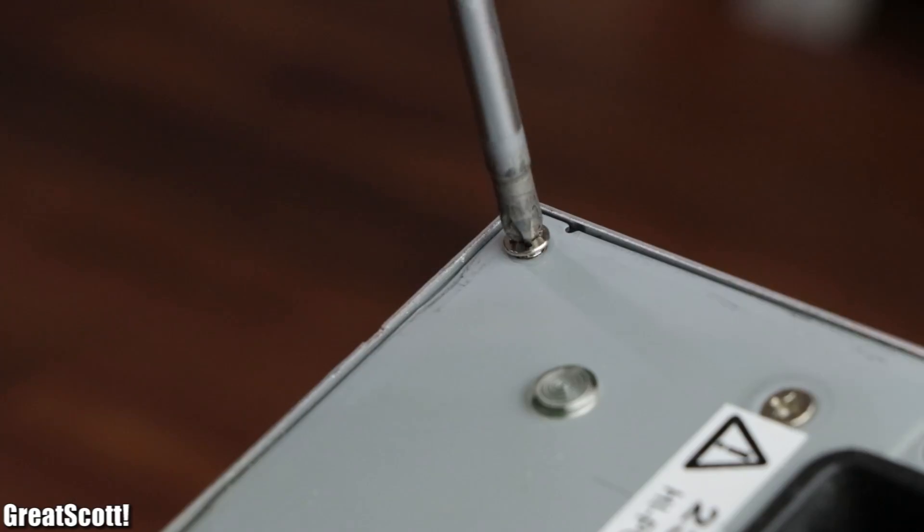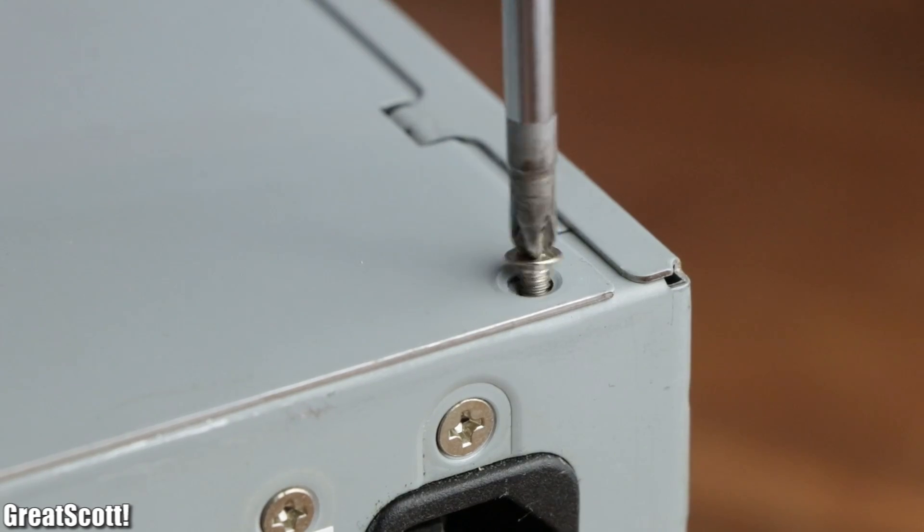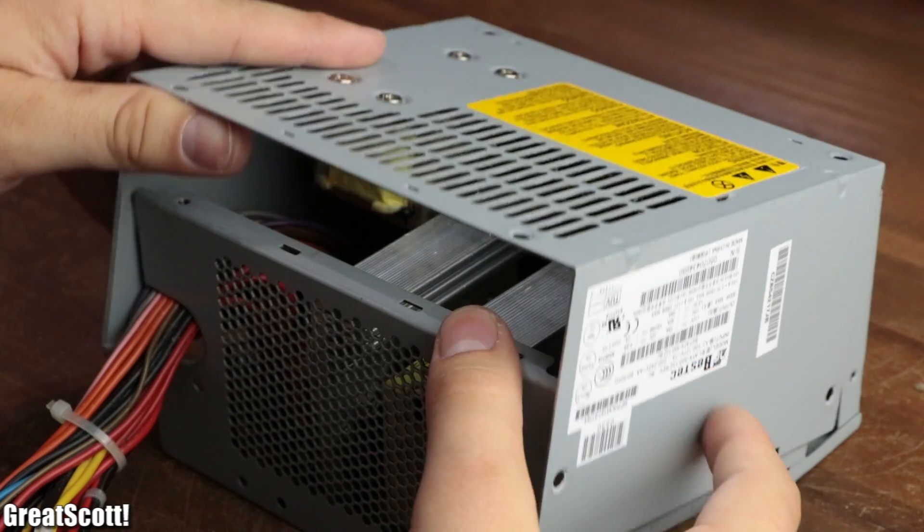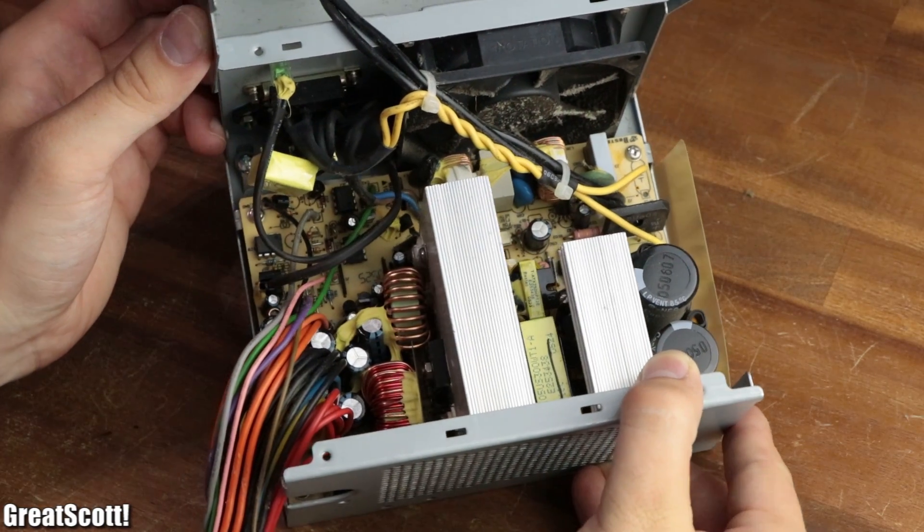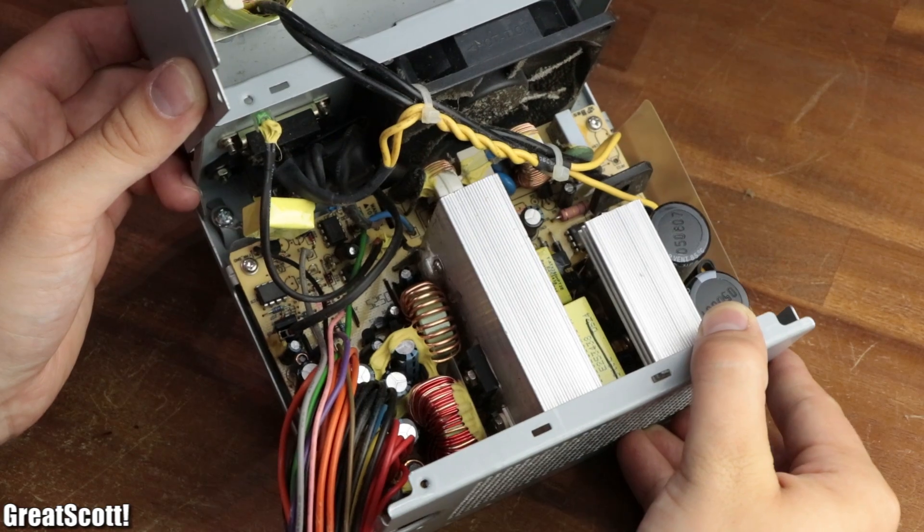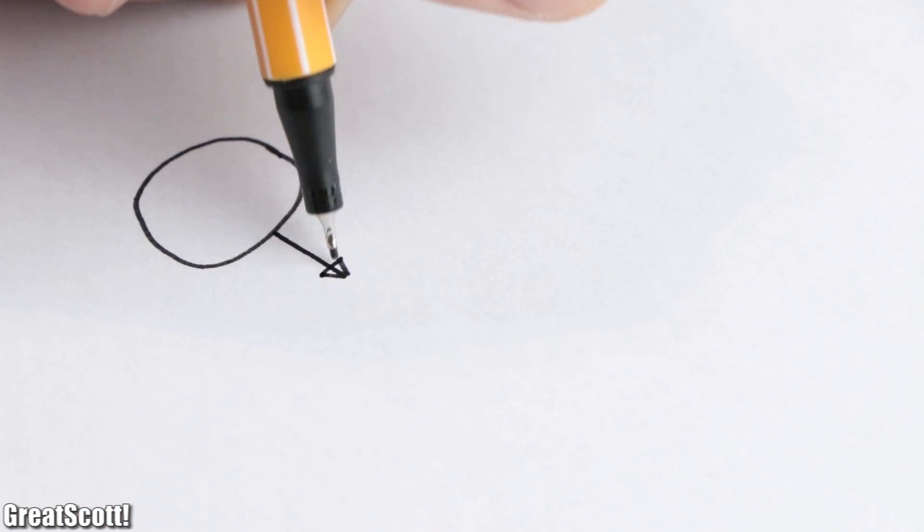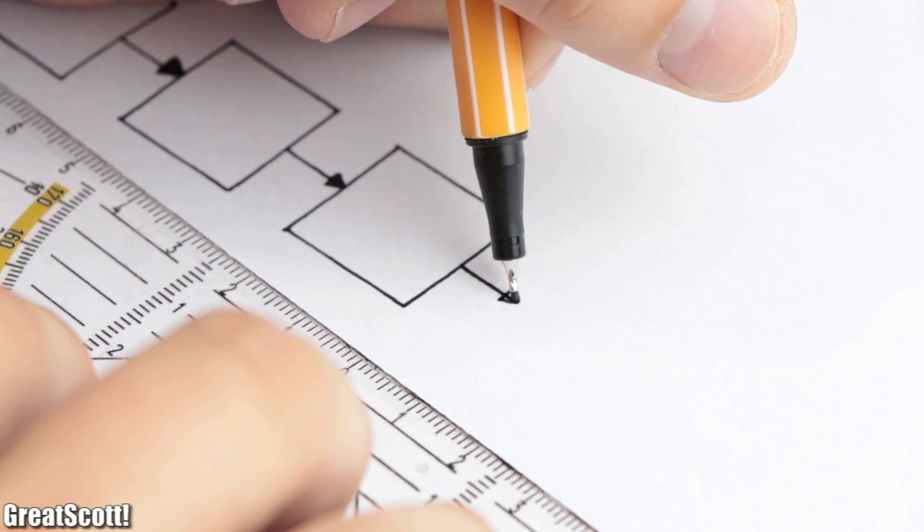First off, I removed all the case screws from my ATX power supply test subject and removed the top cover of the housing. At first glance, the circuit looks very big and confusing, but when we consider the functional principle of a switched mode power supply, it becomes much easier to understand.